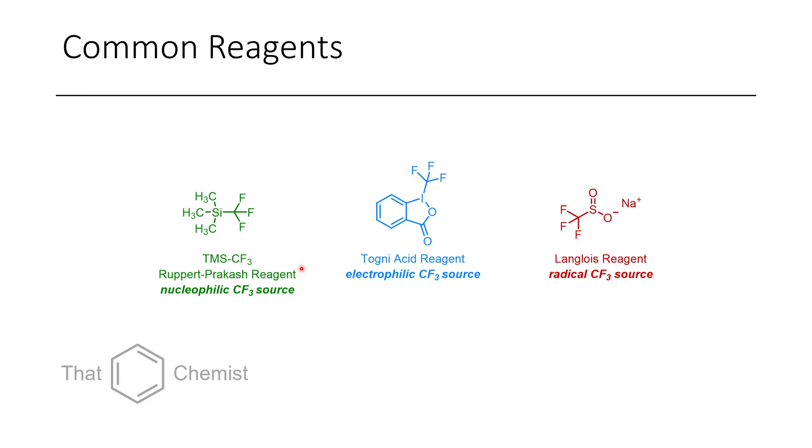This reagent usually will afford the TMS-protected alcohol as the product, although depending on reaction conditions, you can get the alcohol product as is. If you want to add an electrophilic CF3 instead of a nucleophilic CF3, you can use Tony reagent. This is a variant called Tony acid reagent, prepared from Rupert Prakash reagent, which provides more of a CF3 plus rather than a CF3 minus.